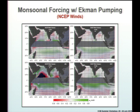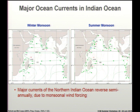You've got these inner monsoons where it's relatively quiescent and makes it happy for ship people out there on the water. This is one of the seminal figures coming out of a Schott and McCreary overview paper, and this really drives home the contrast between monsoon forcing and how it affects the boundary currents.